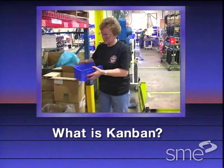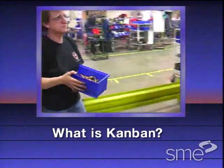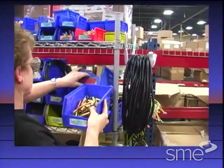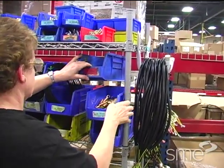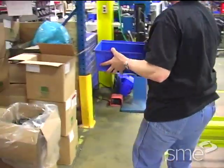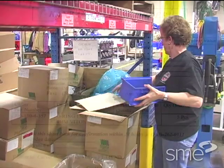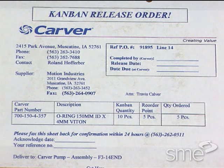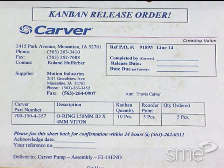To begin, let's first understand what is Kanban. Kanban is a Japanese term for a visual system which is used to trigger activity upstream in a given process. This system contains the critical information that controls the production of the right products in the right quantity and at the right time.